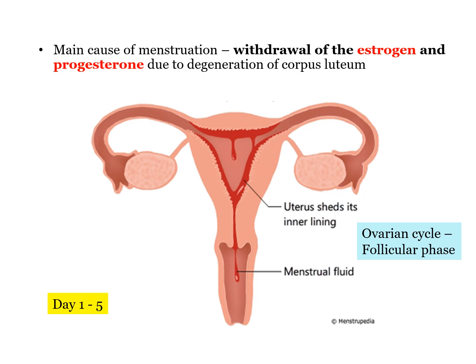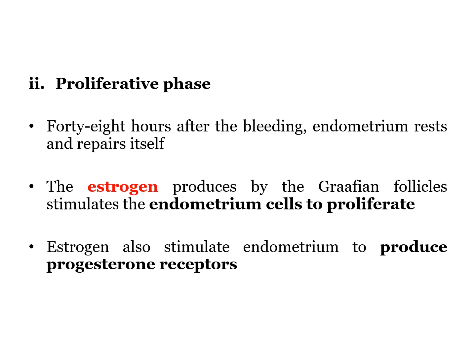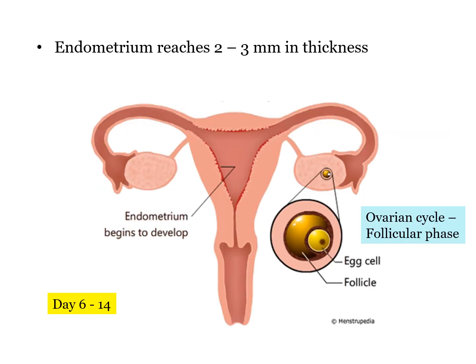At the same time, in the ovary, follicles are starting to grow. Next, 48 hours after menstruation ends, the endometrium rests and starts to repair itself — this is the proliferative phase. Estrogen released by the growing follicles in the ovary stimulates the endometrial cells to proliferate, which is to increase in size and number. It also triggers the endometrium to produce progesterone receptors. The endometrium begins to develop and reaches 2 to 3 mm in thickness. At the same time, follicles are growing in the ovary.